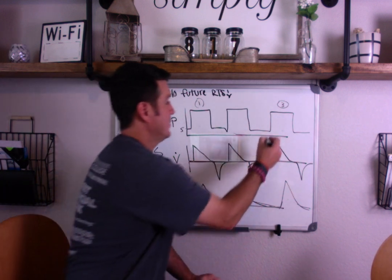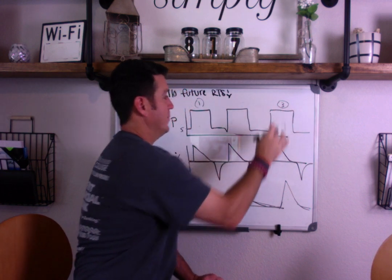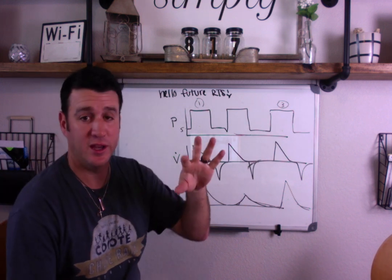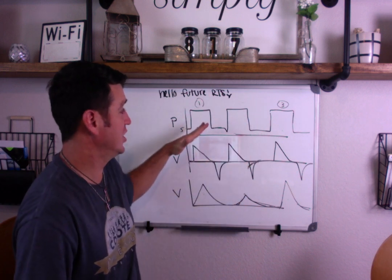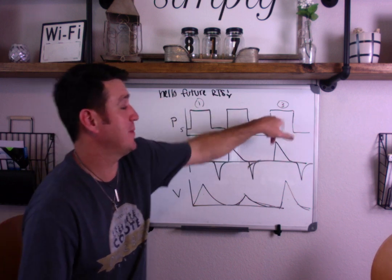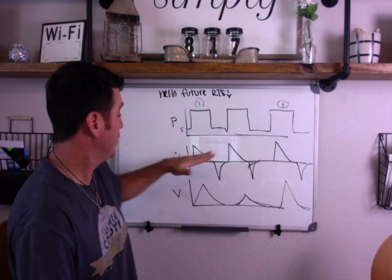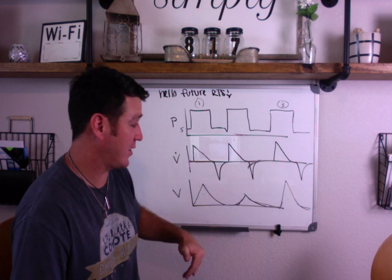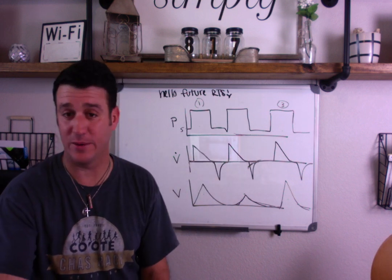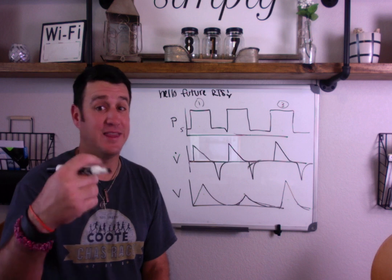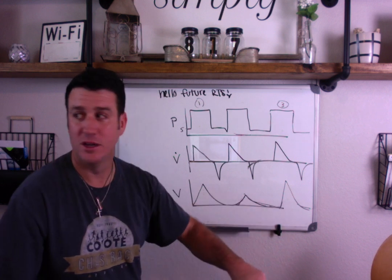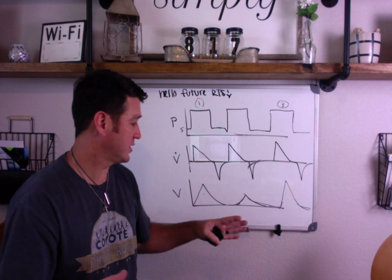Now we've got something a little different. All three pressure waveforms look identical — square, square, square — all three at the exact same level, all three about the same I-time. Flow is a decelerating pattern coming back to baseline, and the next breath is also decelerating. That goes with pressure control. When we look at our tidal volumes, they vary across all three breaths. So this is pressure control ventilation.